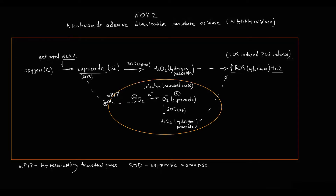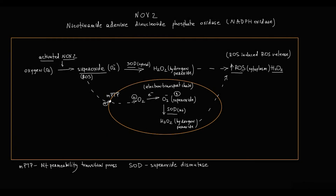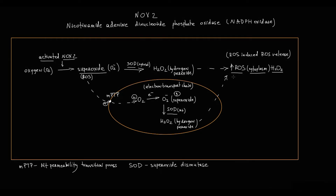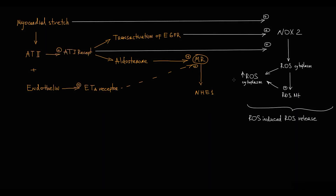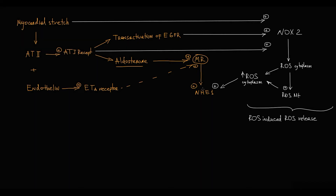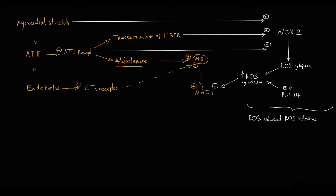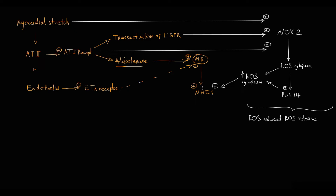Because superoxide dismutase is located in both the cytoplasm and mitochondrial matrix, in the end we have a large amount of hydrogen peroxide molecules in the cytoplasm. Hydrogen peroxide molecules serve as signaling molecules. In the sarcoplasm, they stimulate the activity of redox-sensitive kinases through increased phosphorylation. These kinases subsequently stimulate the activity of the sodium-hydrogen exchanger. So reactive oxygen species activate kinases that stimulate the already increased activity of the sodium-hydrogen exchanger — recall that aldosterone activates the mineralocorticoid receptor, and in its activated state it stimulates the sodium-hydrogen exchanger. These two effects potentiate each other and cause very strong stimulation of the sodium-hydrogen exchanger.